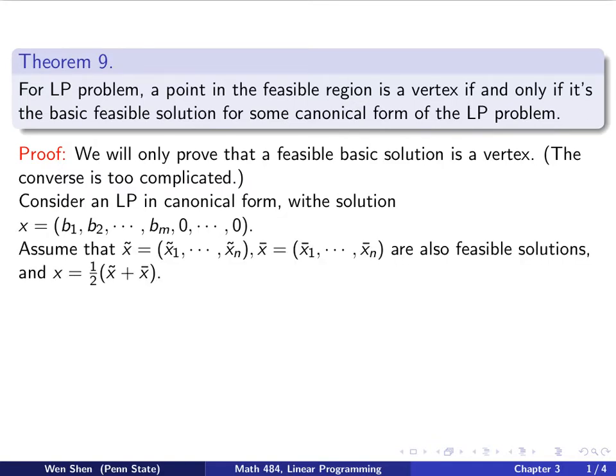Now let's take two other feasible solutions. We call them x tilde and x bar, and we denote the elements with the indices as here. They're both feasible solutions, and we also have that x, this x here, is the half value, the average of these two, so x tilde plus x bar divided by 2.